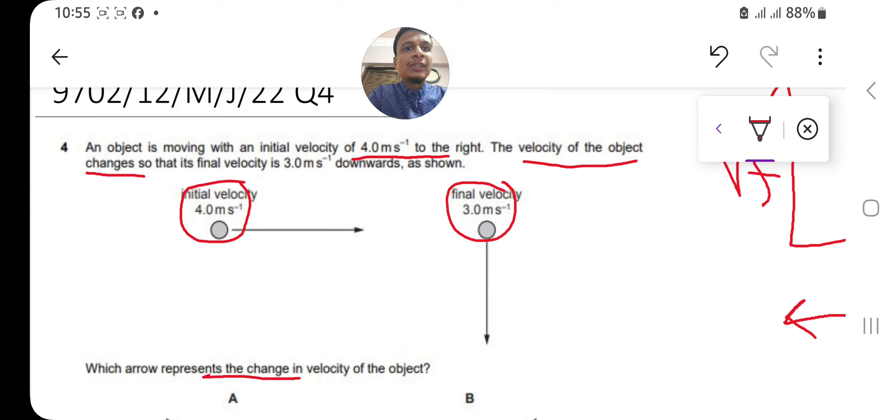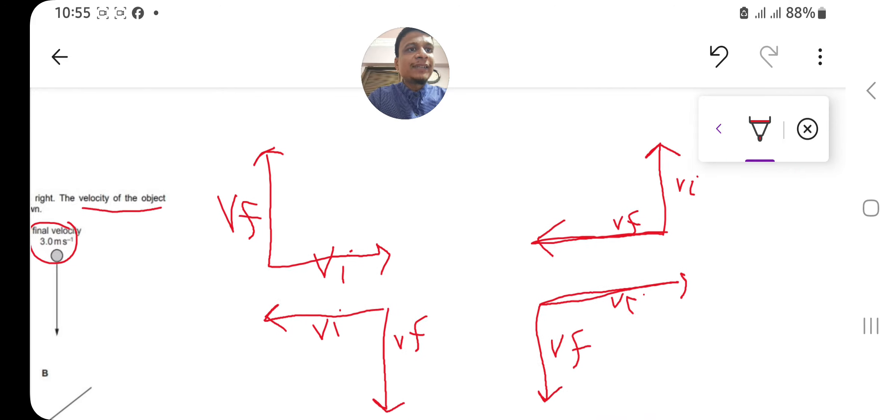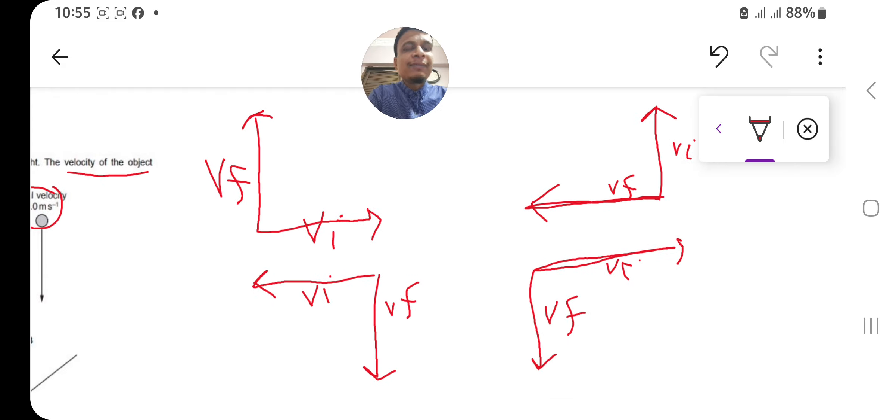So first check these out. Whenever you have Vi and Vf in this scenario, then you will have the change or resultant velocity delta V like this. In this case, whenever you have Vi on the upper side and Vf on the left, you have the velocity changing like this—this is the vector rule of addition.